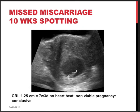Another ultrasound scan, now transabdominal, showing a missed miscarriage. The lady presents at 10 weeks gestation with a certain duration and some spotting but hardly any pain. The transabdominal scan with a full bladder shows an embryo of 1.25 centimeters, consistent with 7 weeks and 3 days, without a heartbeat. Based on the ultrasound scan and gestational age, the conclusion is clear — this is a non-viable pregnancy.